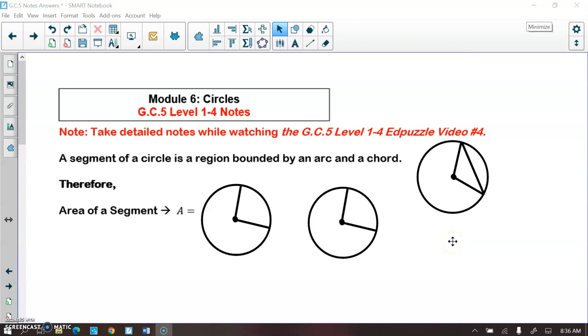Alright, so our last one is talking about segments of a circle. A segment of a circle is the region bounded by an arc and a chord.